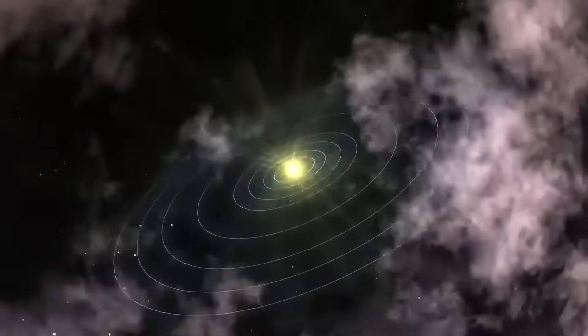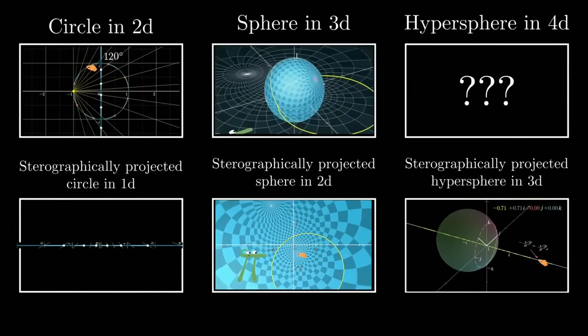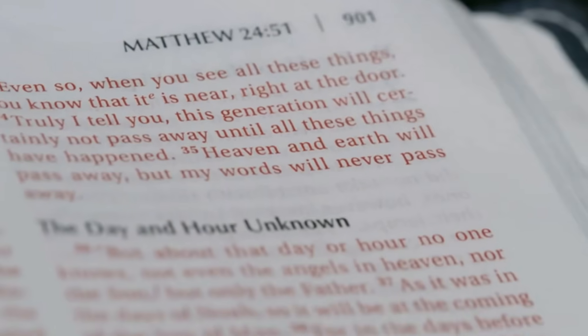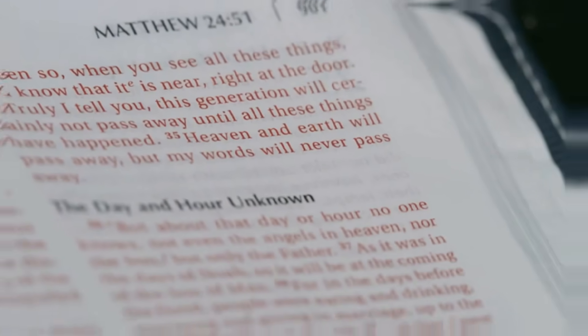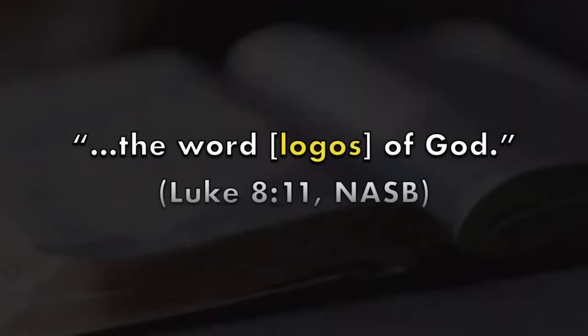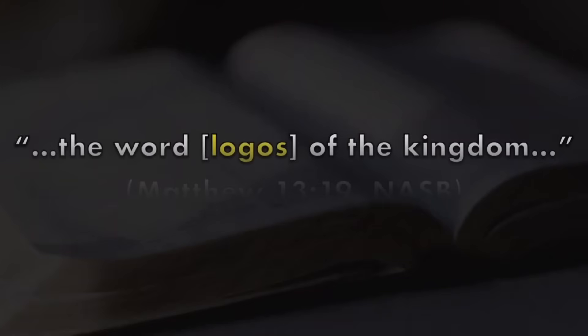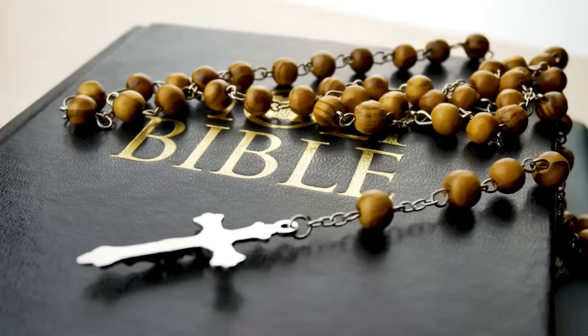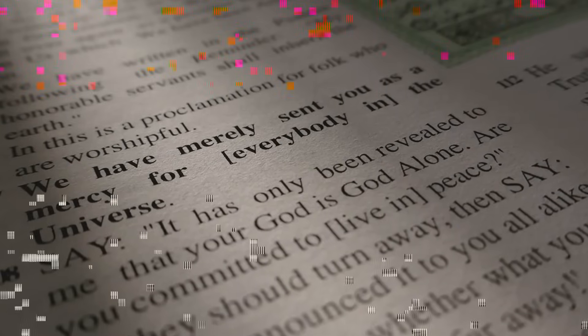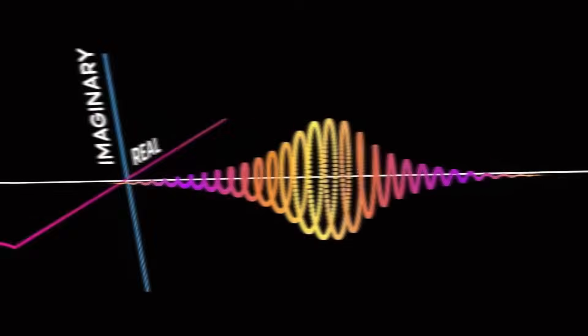John 1:1-3 opens with a profound declaration. In the beginning was the Word, and the Word was with God, and the Word was God. Through Him all things were made. Without Him nothing was made that has been made. The Greek term used for word is logos, which encompasses word, reason, and principle. It implies an ordering force, a logic or pattern underlying reality.